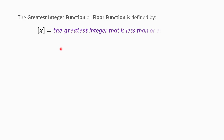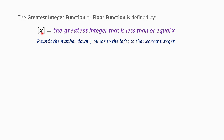The greatest integer of any number is equal to the greatest integer that is less than or equal to that value. This definition sometimes confuses students, so let's simplify it: the greatest integer of any number rounds that number down to the nearest integer.